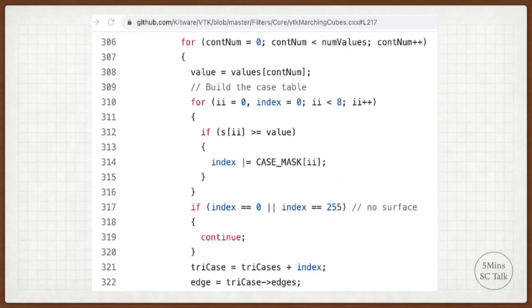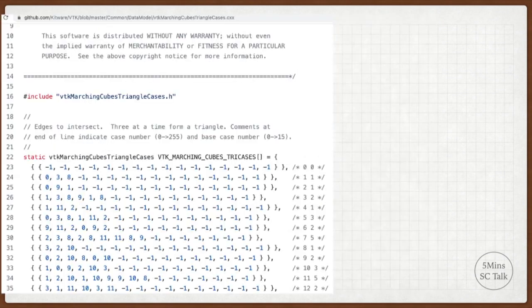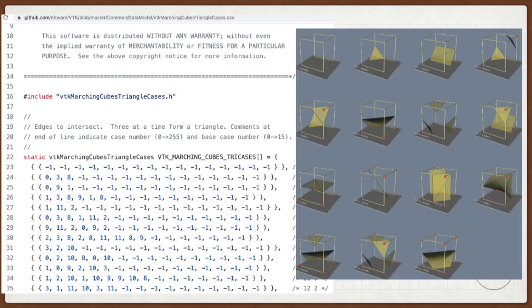With these key data structures, we start to look up case table and map the comparison results between the scalar value and the threshold value into a particular topological shape. The index of the case table is calculated here. The VTK library lists all 256 cases here. The non-negative value represents the index of the edge that we need to intersect with. There are at most five triangles for the marching cube case for the voxel cell, and we need 15 indexes to represent it. The last one is the termination digit.